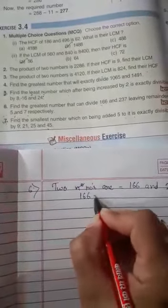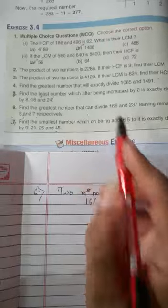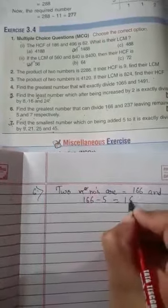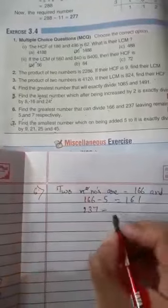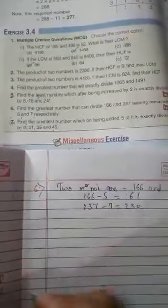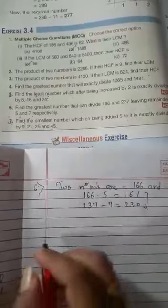Then 166 minus 5, subtract 5 from 166 to get 161. Then 237 minus that 7 remainder, 237 minus 7 equals 230. Now find their HCF.